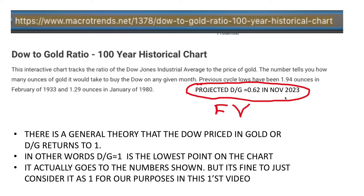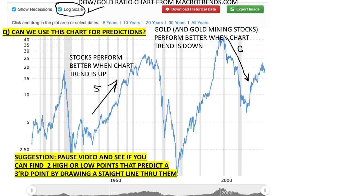I've circled in red the things I'm going to hold off and talk about in a future video, in order to keep this video under 20 minutes. Most everybody's heard of the theory that periodically the Dow priced in gold returns to one — it doesn't return exactly to one, but for our purposes that's fine. On the live chart I have the log scale clicked on, simply because it works better that way.